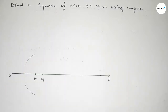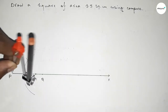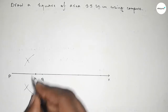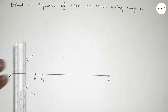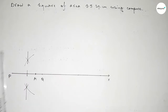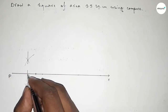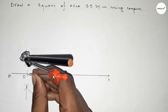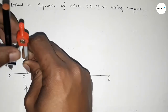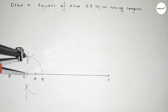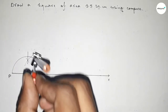Drawing an arc, then with the same length putting the compass on point P and cutting arcs on both sides. Both curves intersect at two points. Joining these two intersection points, this line bisects PX at midpoint O. Now taking the length OP and OQ as radius to draw a semicircle through points P and Q.